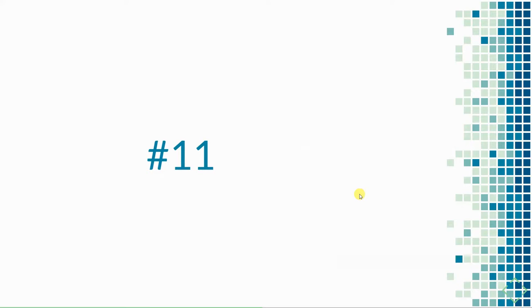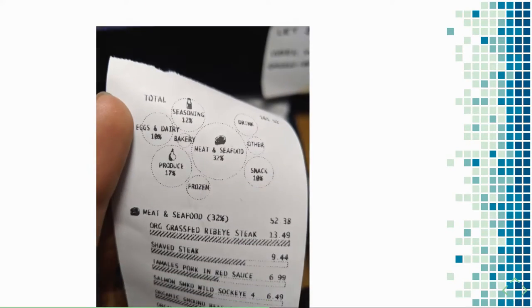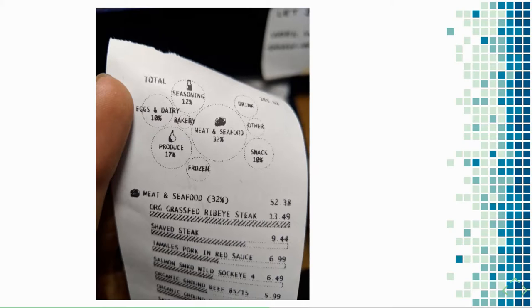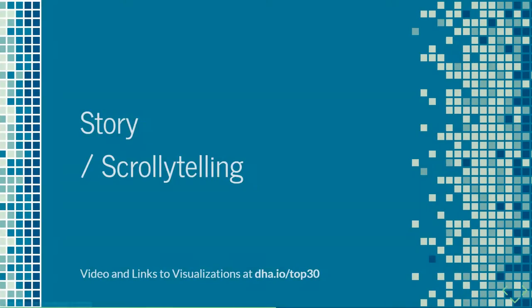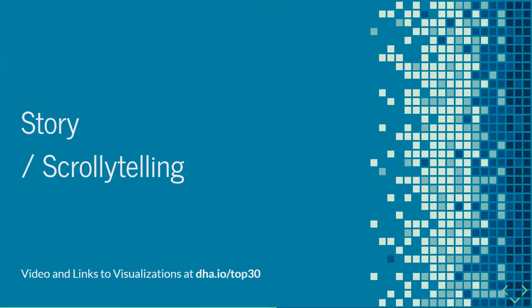Susie Lu prototyped visualizations into our everyday receipts. You can see what was spent by categories in this bubble chart, and the bar charts show the relative price compared to the most expensive item — in this case, the steak. I think this is going to lead to really interesting visualizations, like the number of calories bought for food.